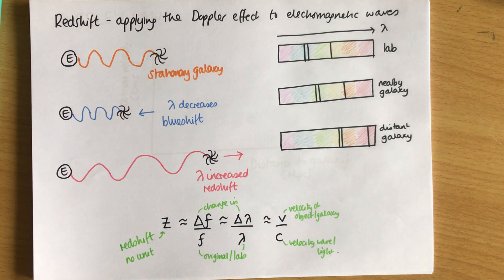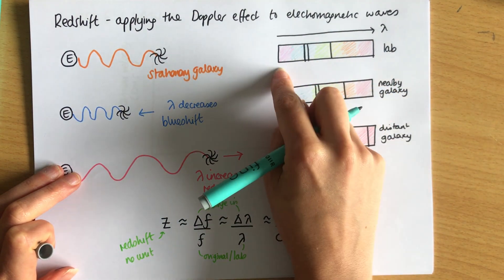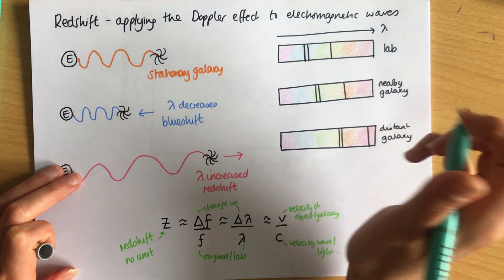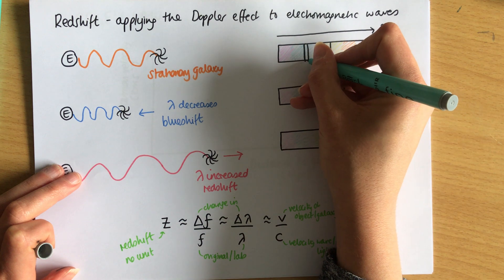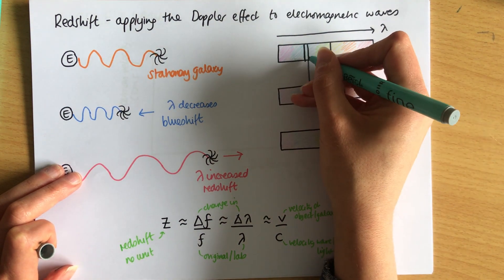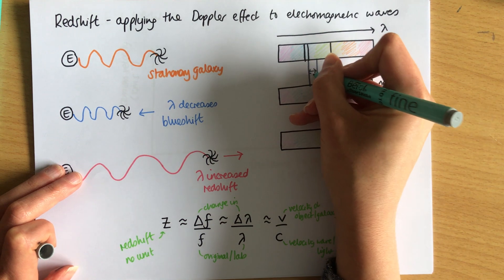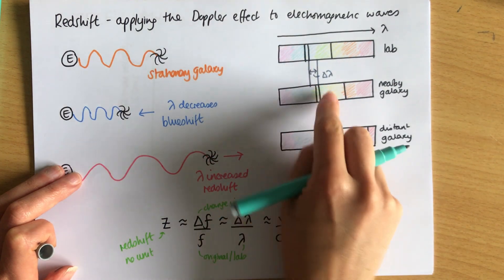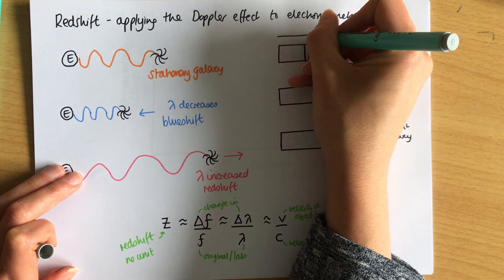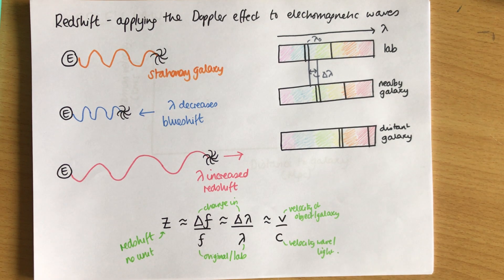So if we're thinking about redshift on a universe scale, we mean C is the velocity of light, so 3 times 10 to the 8, and then V would be the velocity of the object. If you're thinking about the Doppler effect, and maybe an ambulance, C would be the velocity of sound, and V would be the velocity of the ambulance. So just be careful. Now, how do you use it in real life? If I think about my lab and my nearby galaxy, this is a scale of wavelength. It will go from about 400 to 700 nanometers. And what you can do is you can measure the wavelength difference in light. So if I look at one particular line, I would measure this and work out the change in lambda. Either I'd know what this lambda is and what this lambda is and find the difference, or I'd just measure the difference. The original lambda will be this one. And then if it was light, this would be 3 times 10 to the 8, and I can work out how fast that galaxy is moving away from me.